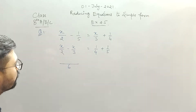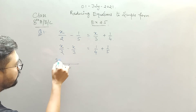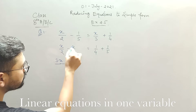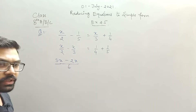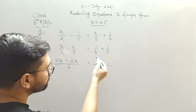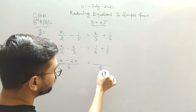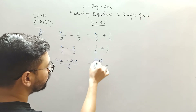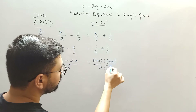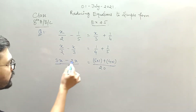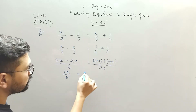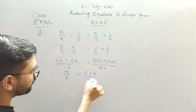Now solve LHS and RHS. The LCM of 2 and 3 is 6, so 2 threes are 6 into numerator, and 3 twos are 6 multiplied by numerator x. Similarly, take the LCM of 4 and 5, which is 20. So 4 fives are 20 multiplied by 1, and 5 fours are 20 multiplied by 1. So 3x minus 2x gives 1x divided by 6, and this equals 5 plus 4 divided by 20.